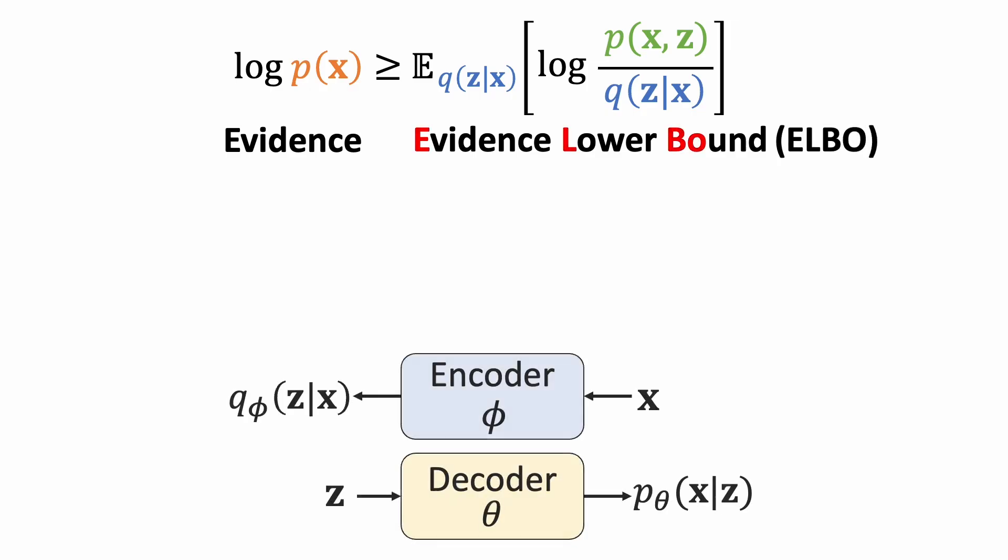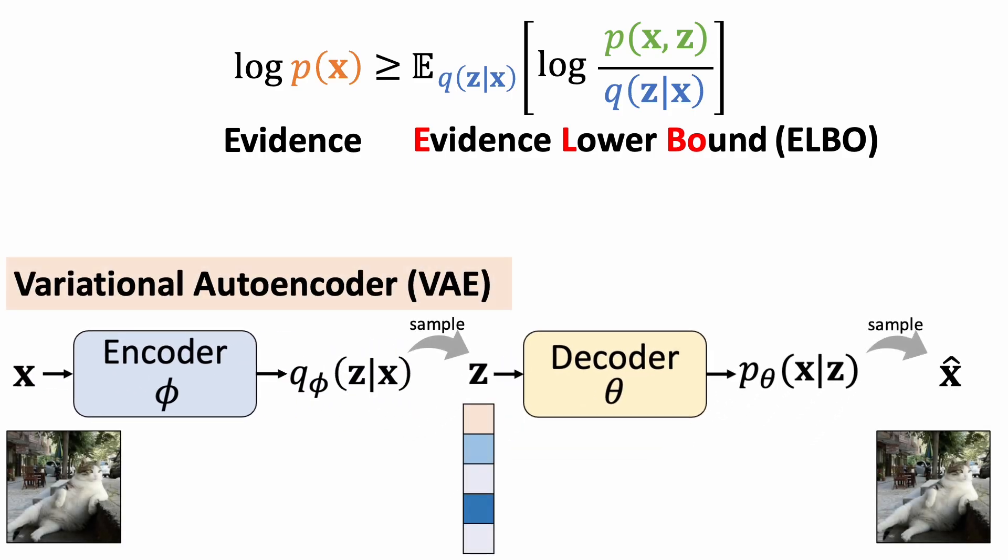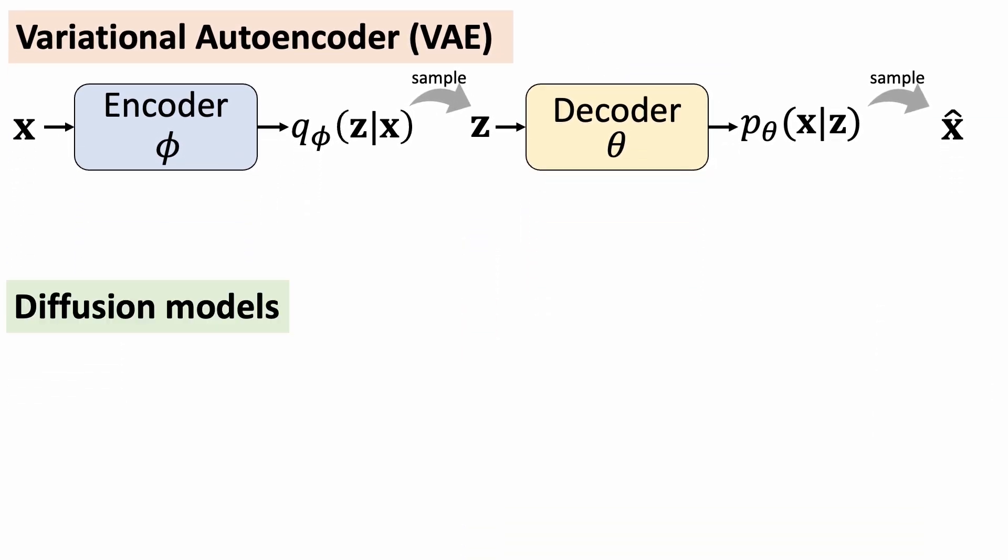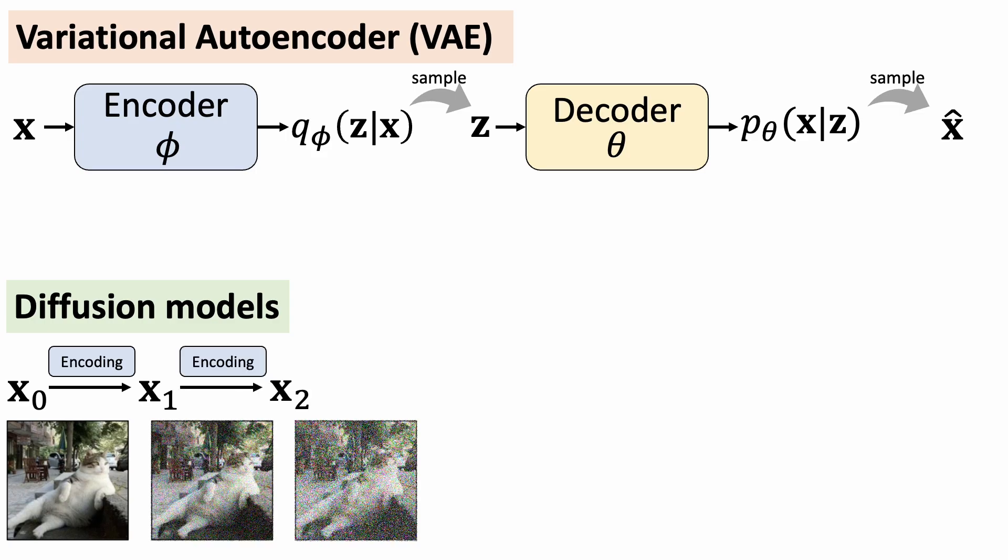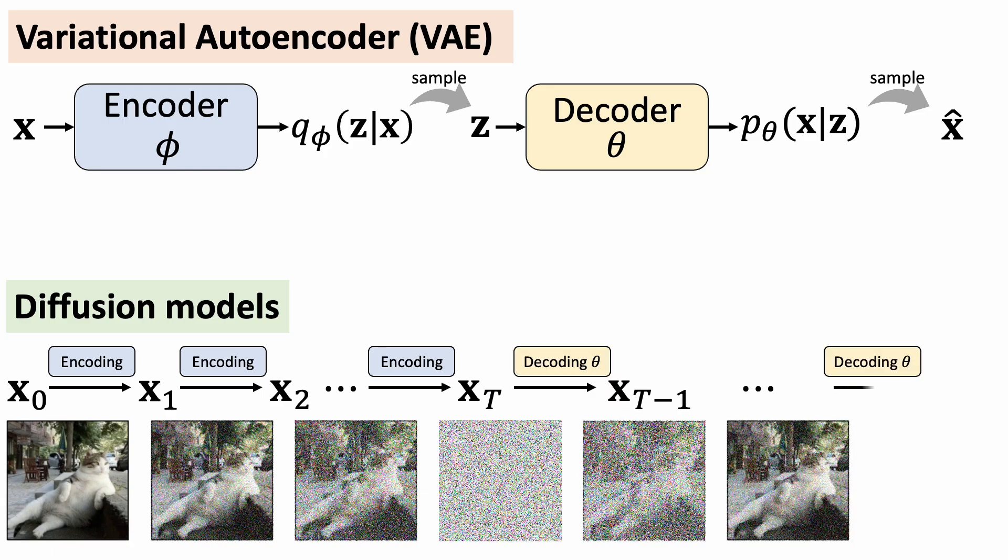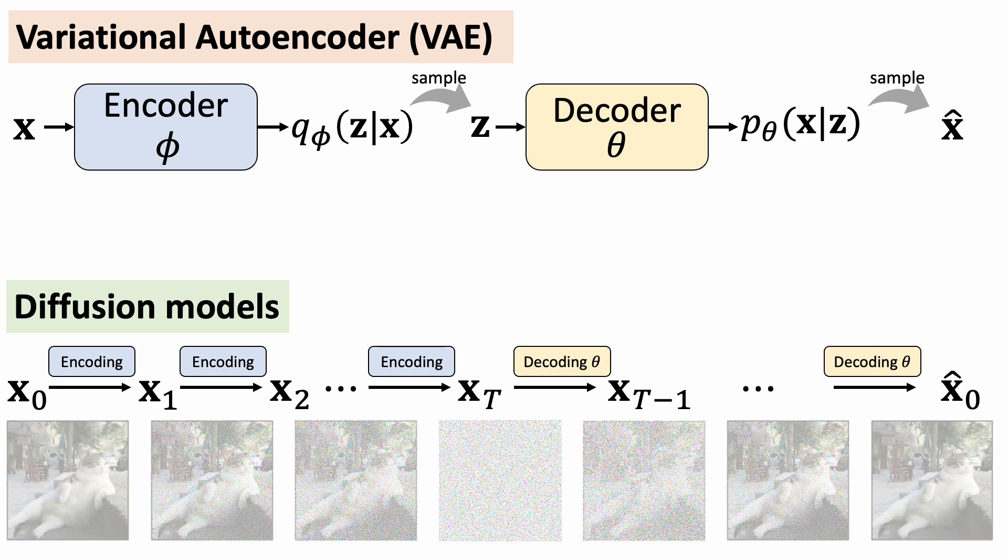One type of latent variable models is variational autoencoder, where they parameterize both the encoder and the decoder as a neural network. We can train both the encoder and decoder by maximizing the ELBO. Diffusion models are also latent variable models. But instead of encoding the observation x in one step, it encodes the image in multiple steps by progressively adding more and more noise. Similarly, the decoding process progressively removes the noise to generate a sample.